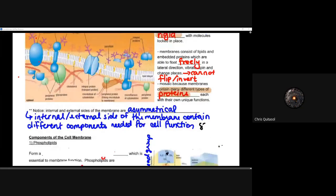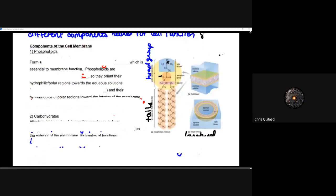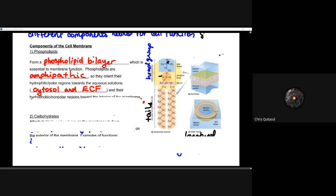Let's look at the components of those cellular membranes. Yesterday we looked at phospholipids as a means to understand how that cellular membrane can form, and it's from that phospholipid bilayer which is essential for membrane function. The key component is that it's amphipathic, meaning they orient themselves with hydrophilic polar regions towards the aqueous solution — whether that's the extracellular fluid on the outside or the cytosol on the inside — because the hydrophobic nonpolar region needs to point towards the interior of the membrane.